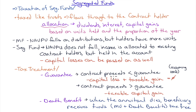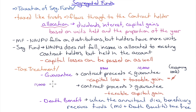Tax treatment of the guarantee: if contract proceeds are less than the guarantee — say market value is $8,000 but the guarantee is $10,000 — you have a capital loss on the $8,000 plus a taxable gain on the $2,000 top-up; they offset each other to zero, but you must still report both line items. If contract proceeds are greater than the guarantee — say the fund grew to $11,000 from an original $10,000 — that $1,000 gain is a taxable capital gain.